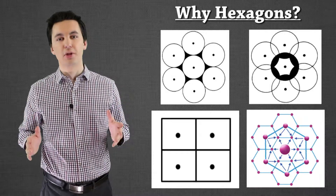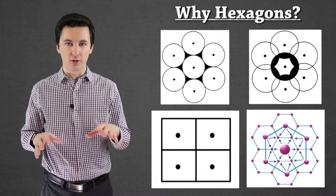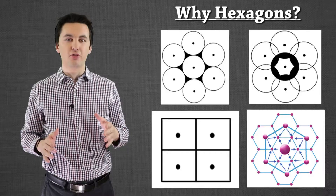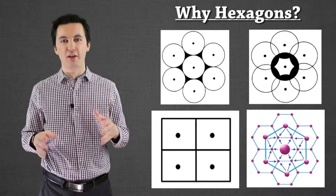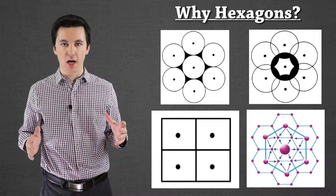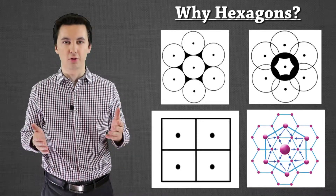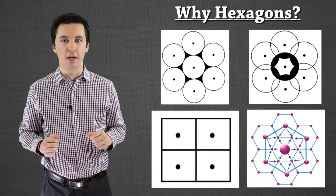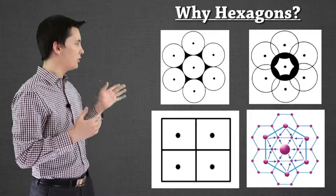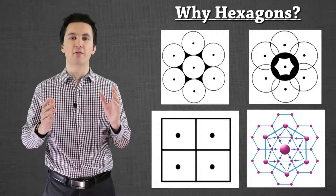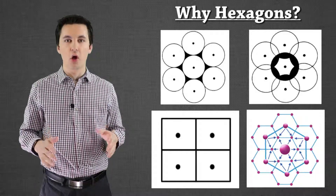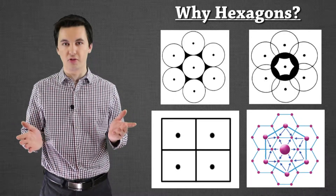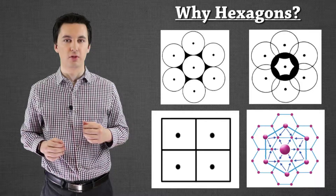For the Central Place Theory we're not going to be using circles — and we're not using squares either. The Central Place Theory uses hexagons for the actual model when laying it out in the real world, and it's important to understand why. Here we can see circles, squares, and hexagons, all set up to show what the Central Place Theory would look like with these shapes.